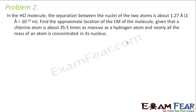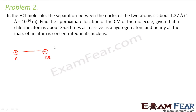Let us look at the next problem. It says that in the HCl molecule, the separation between the nuclei of the two atoms is 1.27 angstrom. So the two atoms are hydrogen and chlorine. Find the approximate location of the center of mass of the molecule, given that a chlorine atom is 35.5 times as massive as a hydrogen atom. Nearly all the mass of an atom is concentrated in its nucleus. So let us suppose that this is my center of mass, denoted by point C.